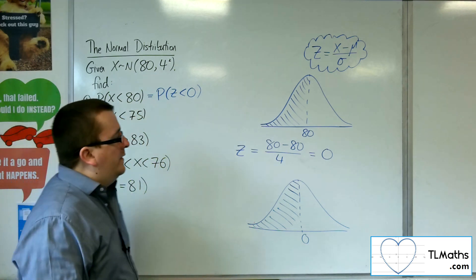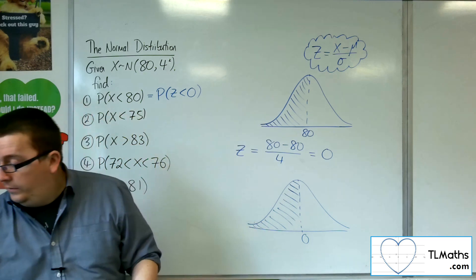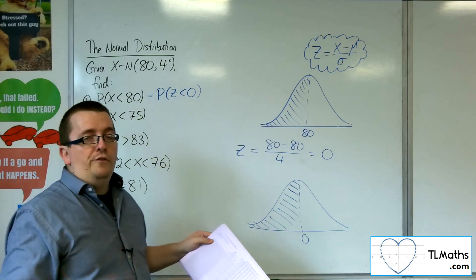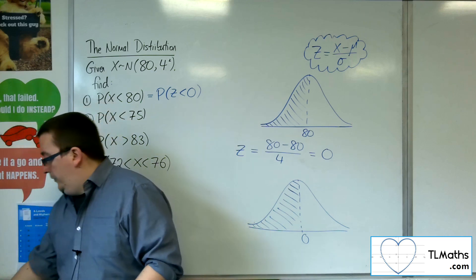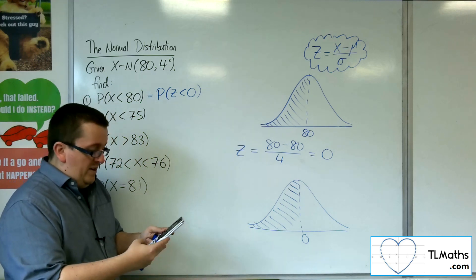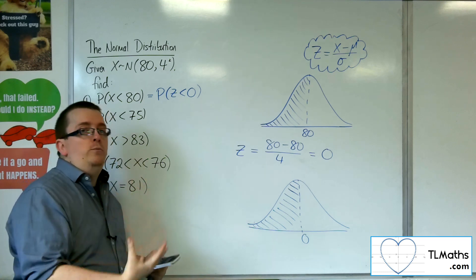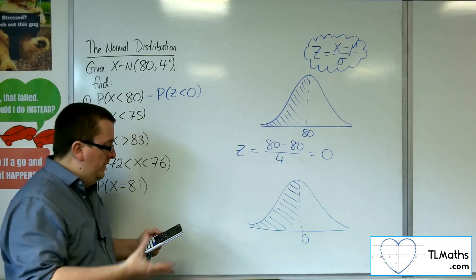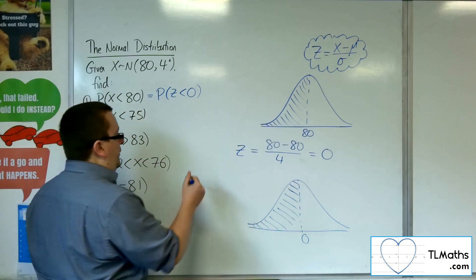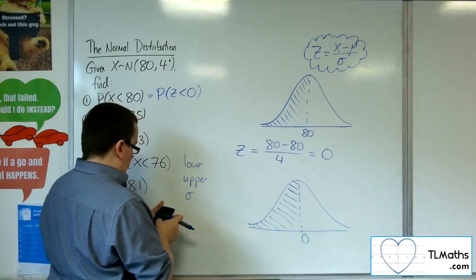Using our calculator: if we were using tables, we could look this up — the probability of Z being less than 0 — and the tables give 0.5000, as expected. On the calculator, go to Menu, then number 7 on the ClassWiz, then Normal CD. The C represents cumulative, just like with the binomial. Normal CD is for cumulative probabilities. You get four options: a lower, an upper, then sigma, and then the mean.